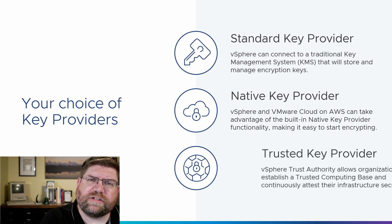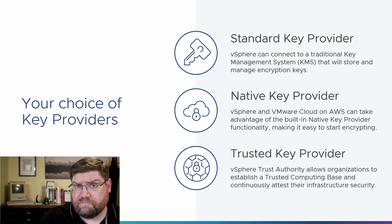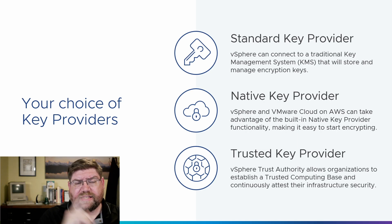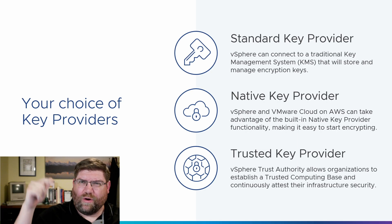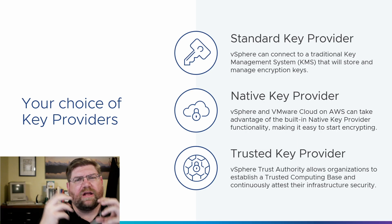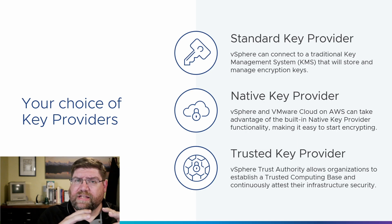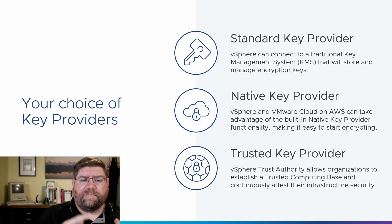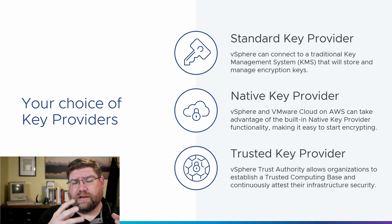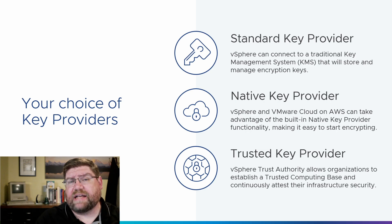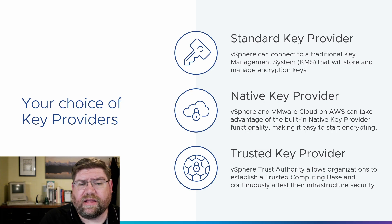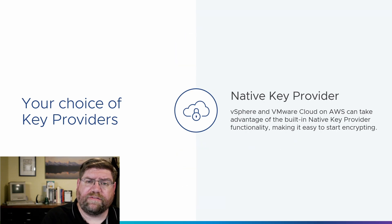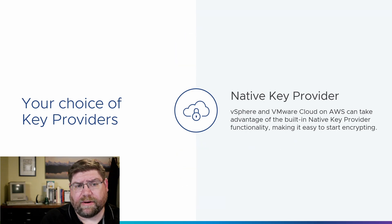The third option is trusted key provider. There's a feature in vSphere 7 and newer called vSphere Trust Authority, where we can tie a standard key provider so that hosts that don't pass attestation — vSphere Trust Authority checks hosts every eight hours or so — if they're not in a good state, if they've had malware installed or have an invalid configuration, the vSphere Trust Authority will deny access to the cryptographic keys. That's a good thing, but it's out of scope for this — we're just going to talk about native key provider, which is pretty easy to set up.